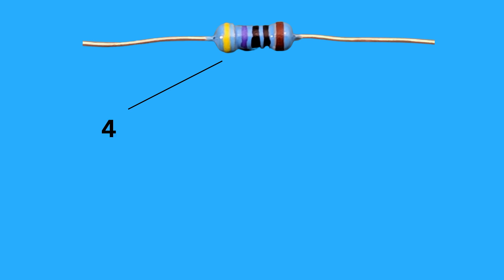Yellow has a value of 4. Violet has a value of 7. Black has a value of 0. That gives us 470. Black is the multiplier, which is 1, so 470 times 1 equals 470 ohms.